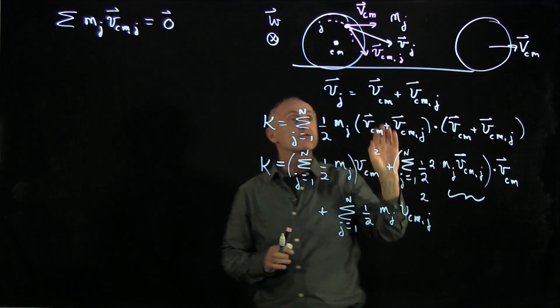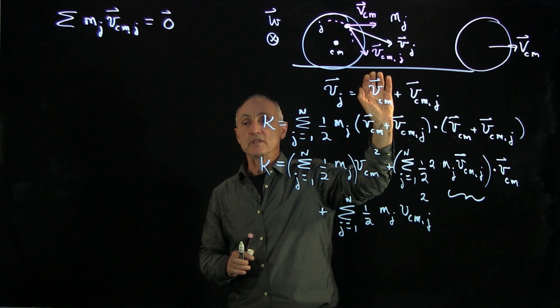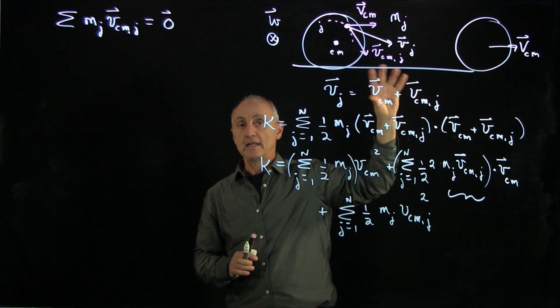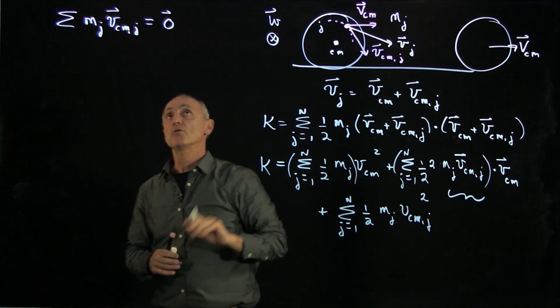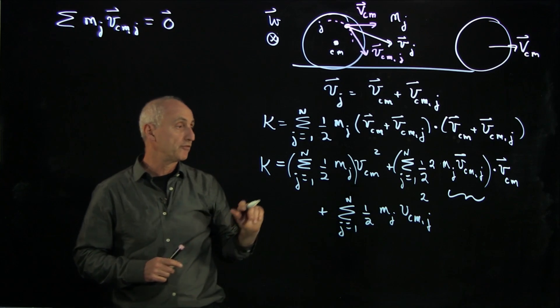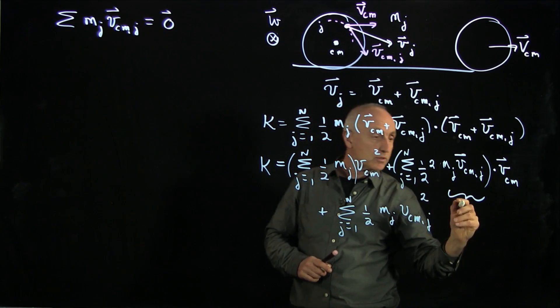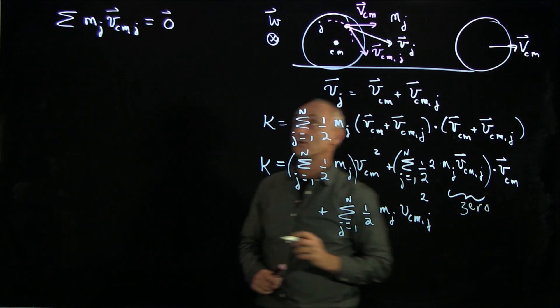So for instance, if you're in the center of mass frame, you're moving with vcm, the only velocity is this. And in that frame, the sum of mj vcmj is 0. And we did a video on that one before. And that's exactly what's in this term. So this term is 0.